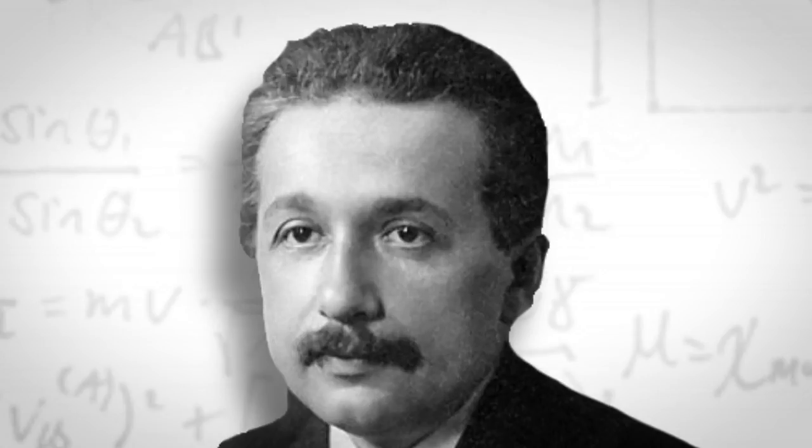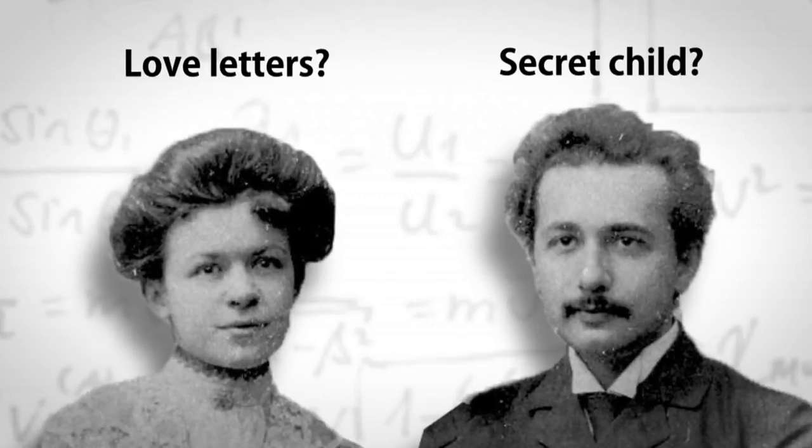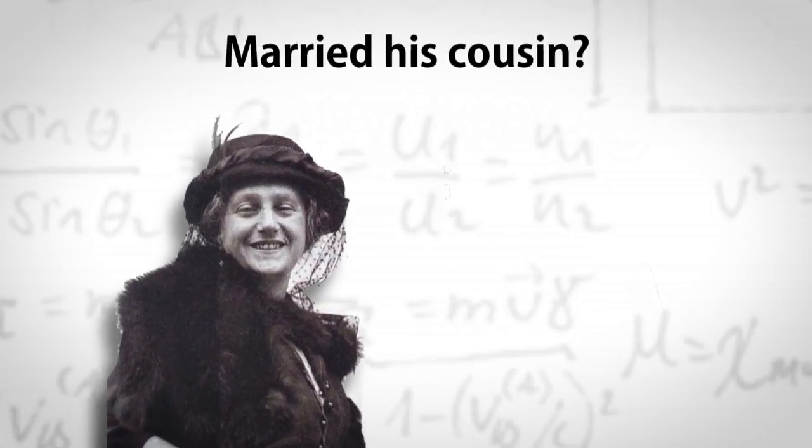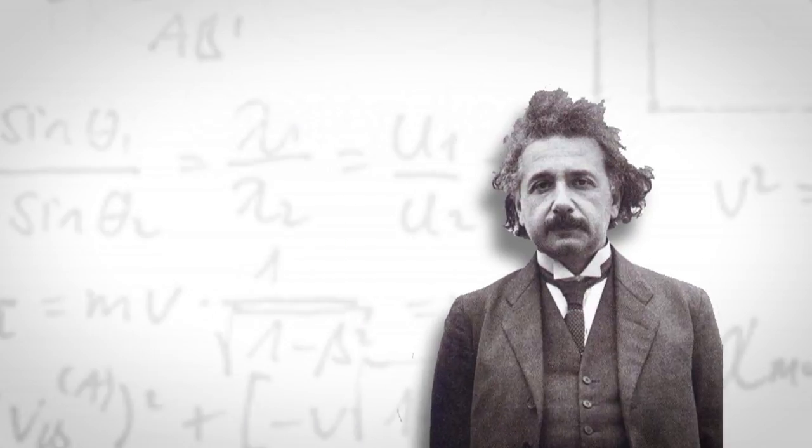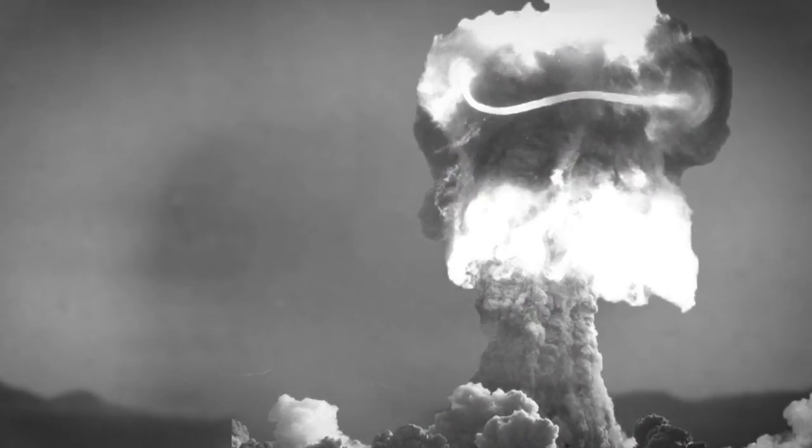But Einstein was also a complicated guy, one who actually struggled to find a teaching gig at first. And his romantic life had more than a few knots and tawdry secrets. Despite being an avowed pacifist, he consulted on the Manhattan Project.